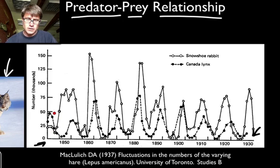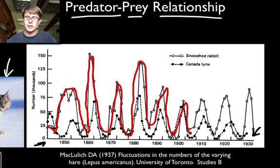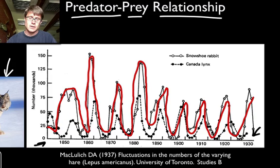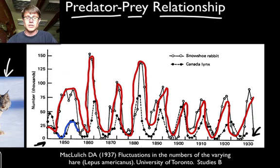They approximated the snowshoe hare population and the lynx population from pelt counts. The snowshoe hare population would cycle up and then down repeatedly. We see that a lot in populations that breed quickly, like rodents or rabbits. As the snowshoe hare population increases, we then see an increase in the lynx population — because they're feeding on them. When the hare population goes up there are more of them, so Canada lynx are able to survive and pass their genes on. And then as the snowshoe hare population drops off, the lynx population drops too — there's no snowshoe hare to eat.